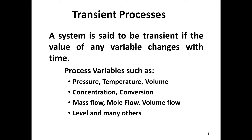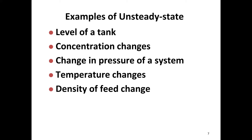Whenever the value of any variable changes with time, we have a transient process, as you learned in Chapter 4. When we say process variables, we mean pressure, temperature, volume, concentration, conversion in reactions, mass flow, mole flow, or volume flow. Examples of unsteady state or transient situations include: level of a tank changing, concentration changing in reactions, or a change in pressure, temperature, or density in our system.